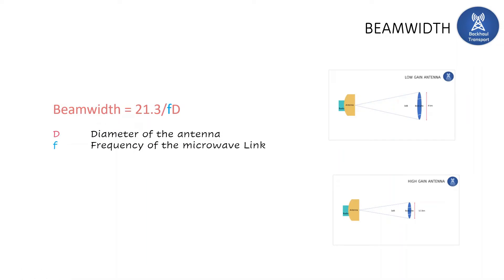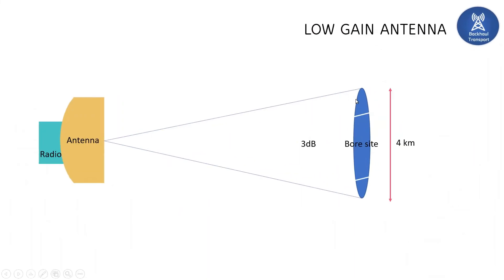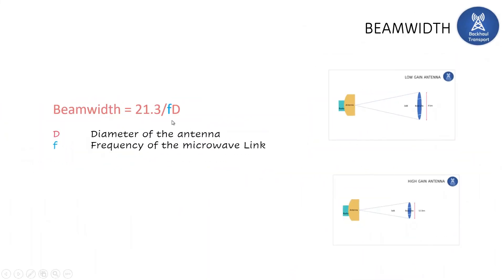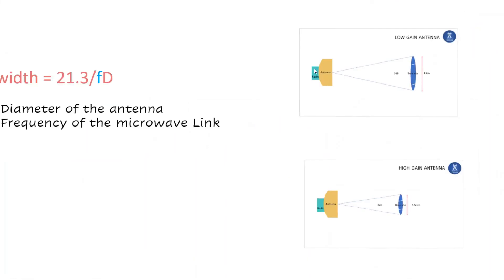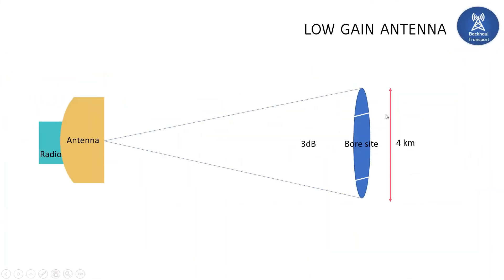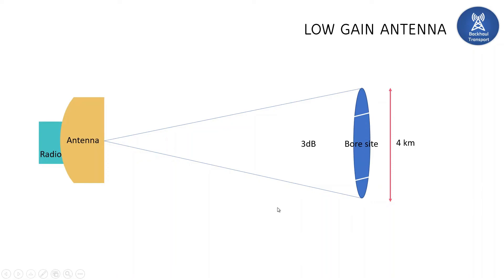There is a direct relationship between beam width and antenna gain. Beam width also depends on the frequency of the microwave link and the diameter of the antenna, but inversely. Whenever frequency and diameter increase, beam width decreases — giving a narrow, high-gain beam. When frequency or diameter decreases, beam width increases, resulting in a low-gain, wide-bore-site beam.